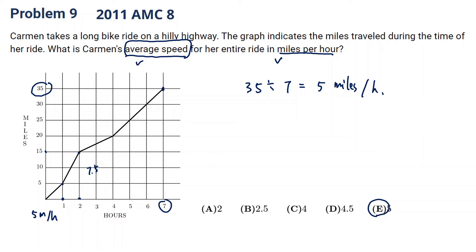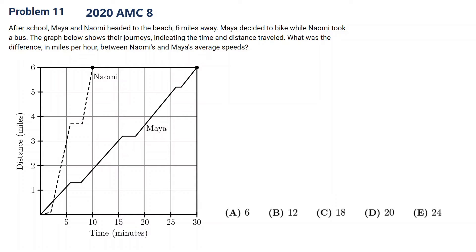Okay, let's see the next one. It's 2020 problem 11. Let's pause the video and see if you can get it. Okay, let's take a look. After school, Maya and Naomi head to the beach six miles away. That's the distance. Maya decided to bike, Naomi took a bus. The graph below shows their journey, the time, time here. The time in minutes. This is 10 minutes, 30 minutes.